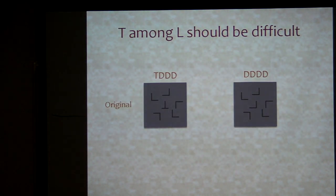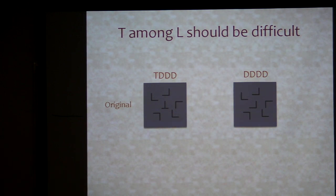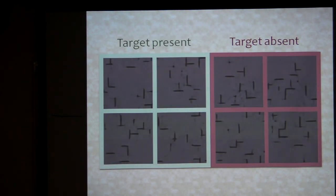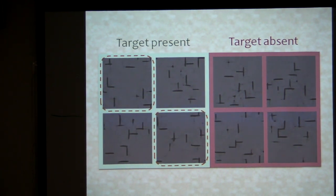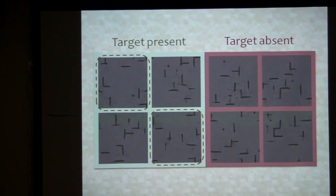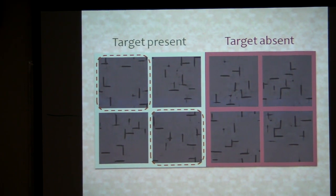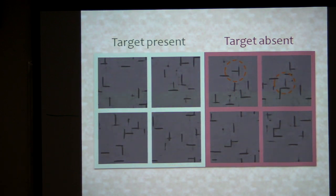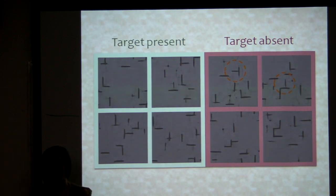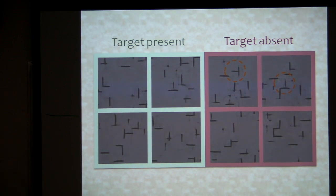T among L's should be relatively difficult — T's and L's can be any orientation. Here's what that looks like. Some things make this pretty hard: there are some target-present mongrels where there's nothing that looks like a T, and some really nice T's in the target-absent case — like an illusory configuration. So that should be pretty hard, and our subjects find that quite difficult. Here's a fun one: looking for a white vertical among white horizontals and black verticals. You actually get illusory conjunctions — white verticals in the target-absent that weren't in the original display.